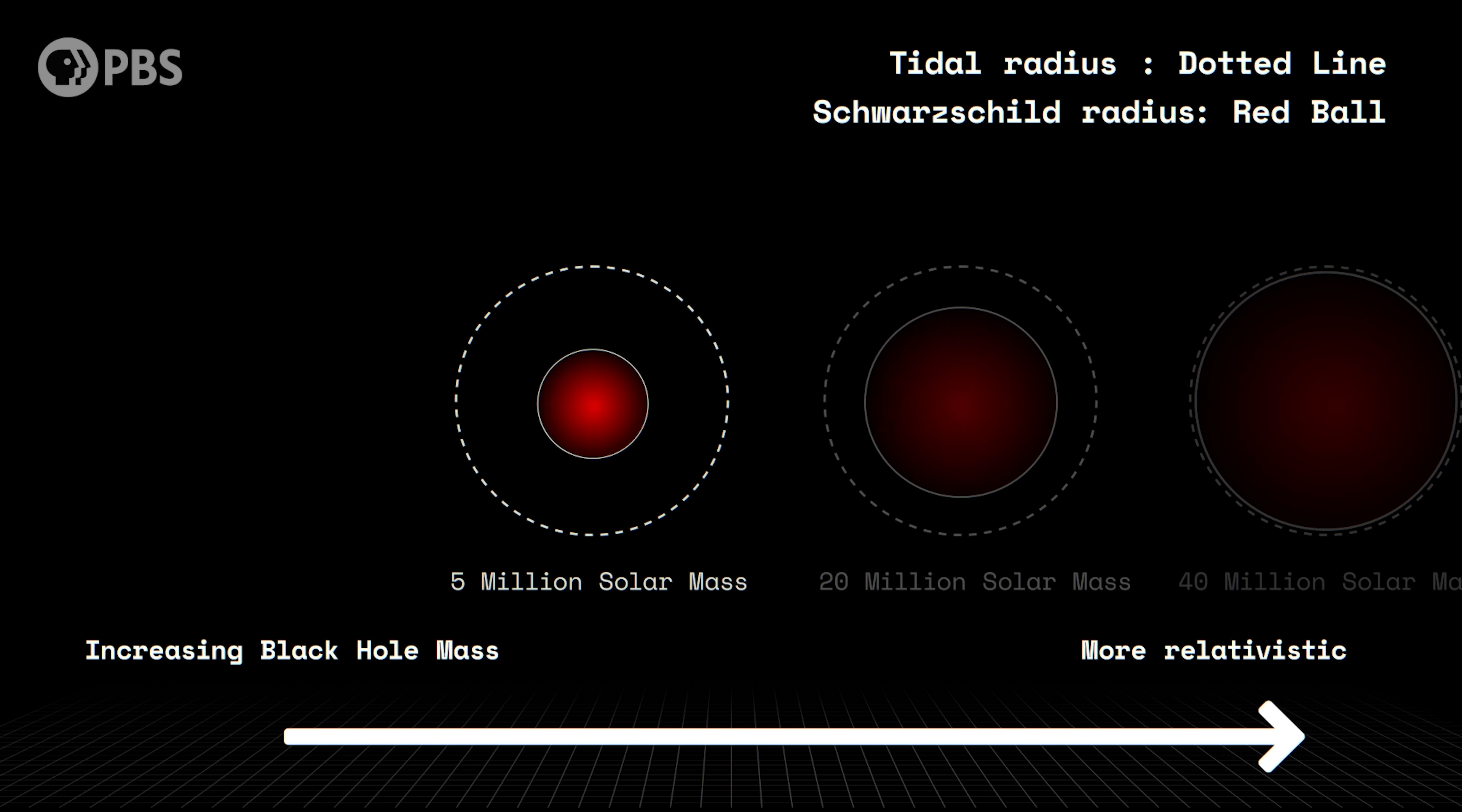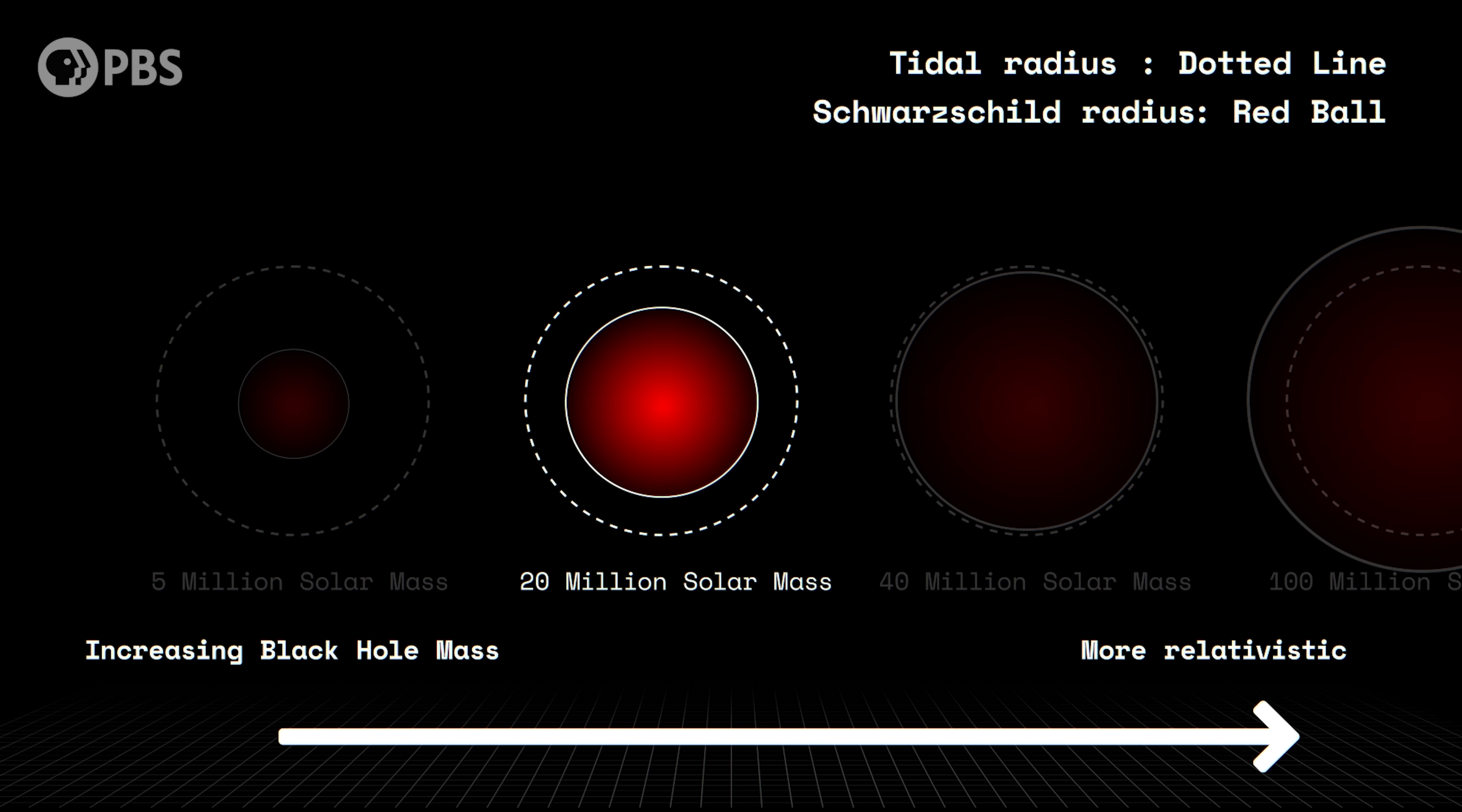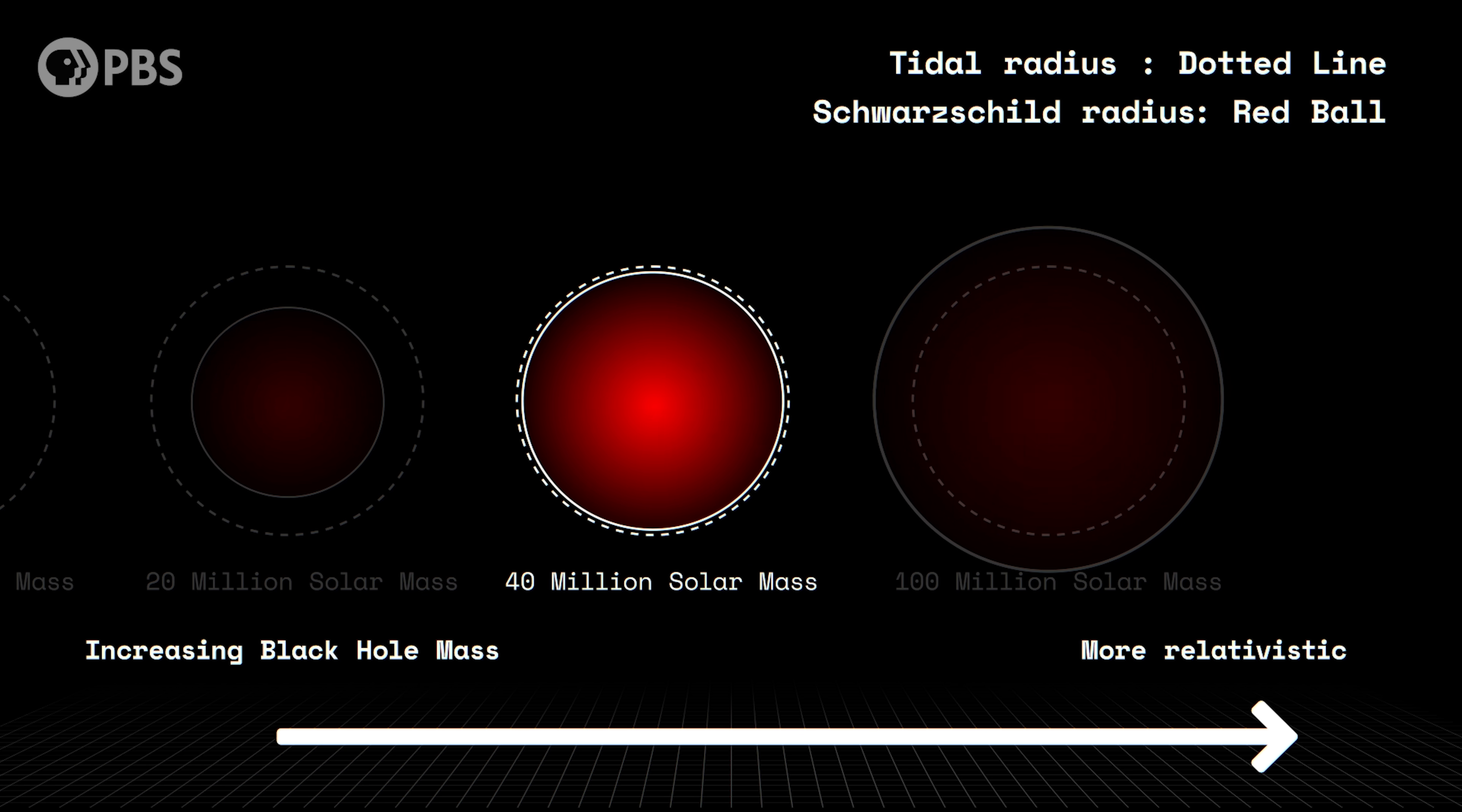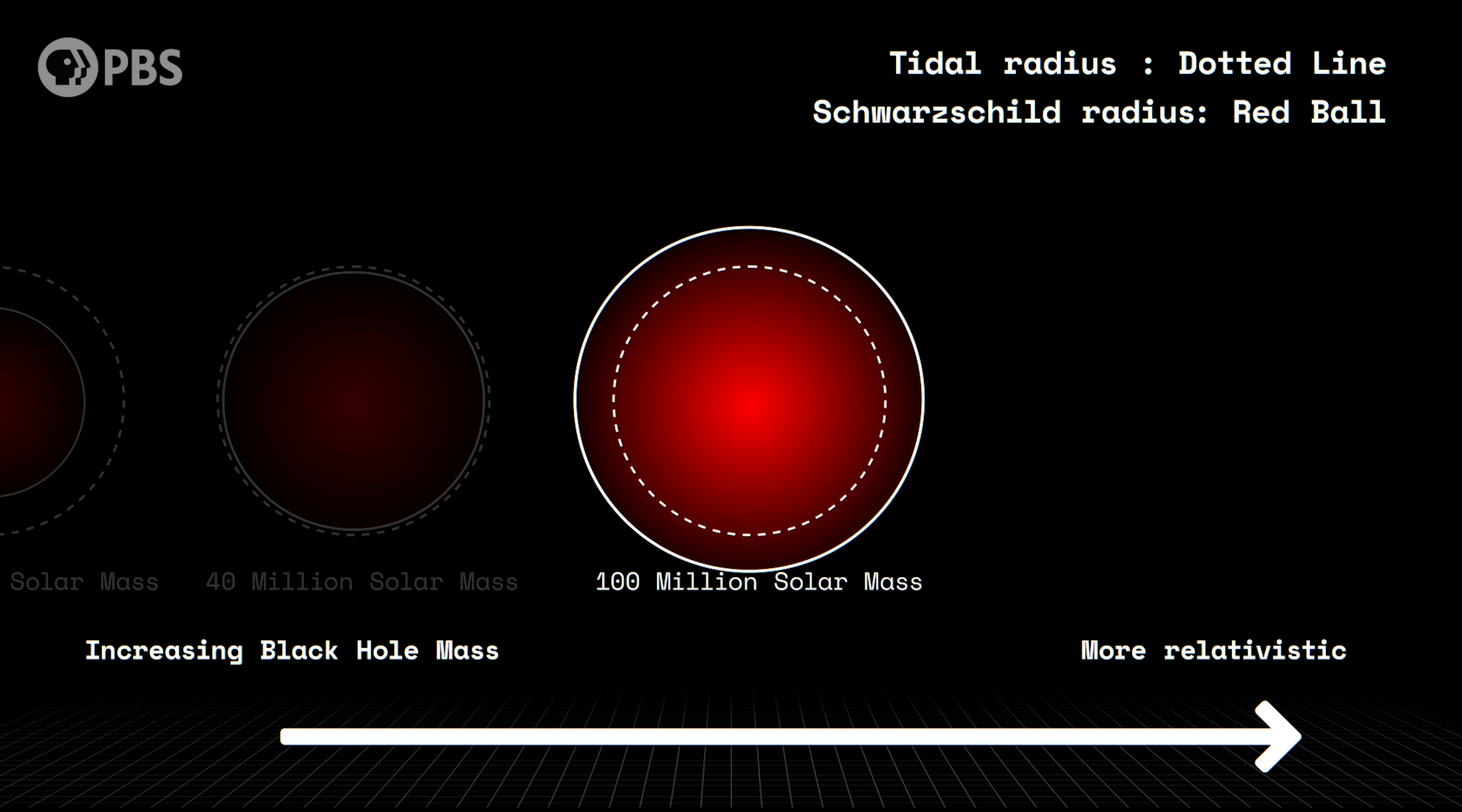These extreme TDEs should be rare because the star has to make a very close approach. But it turns out that for larger supermassive black holes these are the only tidal disruption events that can happen. That's because as the mass of the black hole grows, both the event horizon and the tidal radius grow, but the event horizon grows faster. So that at a few tens of millions of solar masses, the tidal radius is very near or even inside the event horizon. Approaching these masses, if a star gets close enough to be disrupted at all, it's also close enough to undergo an extreme TDE.